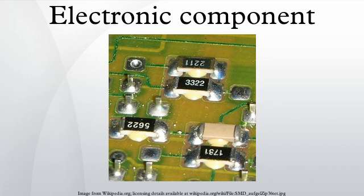Capacitors store and release electrical charge. They are used for filtering power supply lines, tuning resonance circuits, and for blocking DC voltages while passing AC signals, among numerous other uses. Types include: capacitor, integrated capacitors — MIS capacitor, trench capacitor. Fixed capacitors: ceramic capacitor, film capacitor, electrolytic capacitor, aluminum electrolytic capacitor, tantalum electrolytic capacitor, niobium electrolytic capacitor.